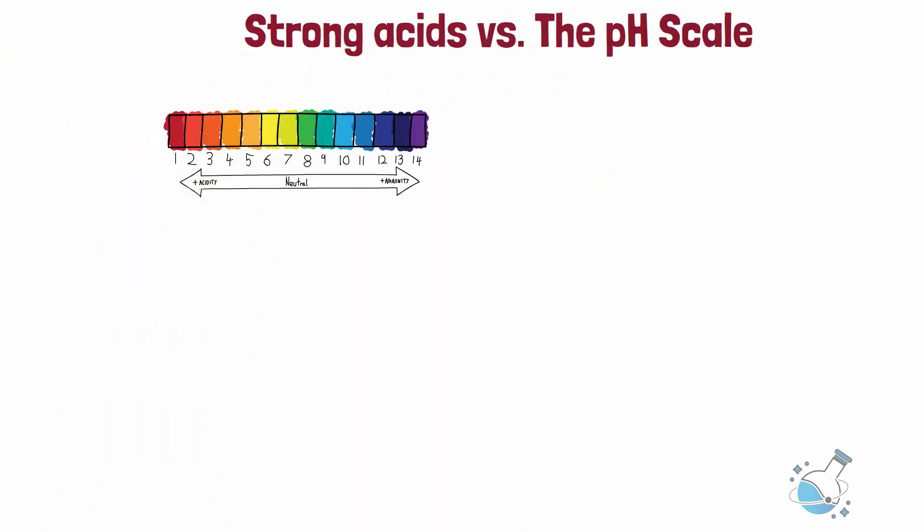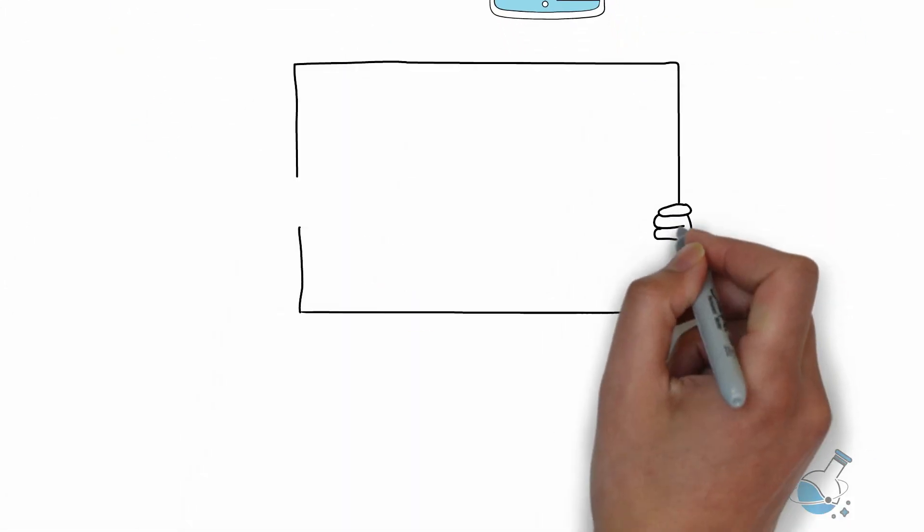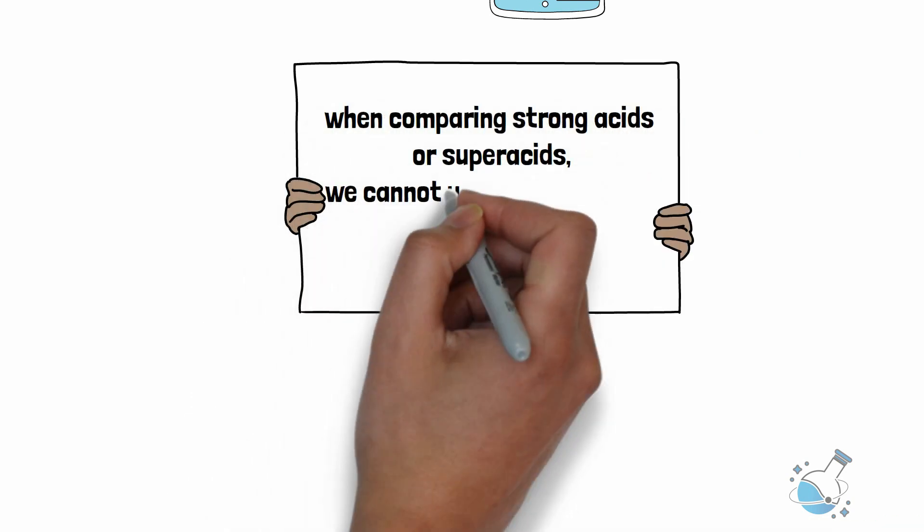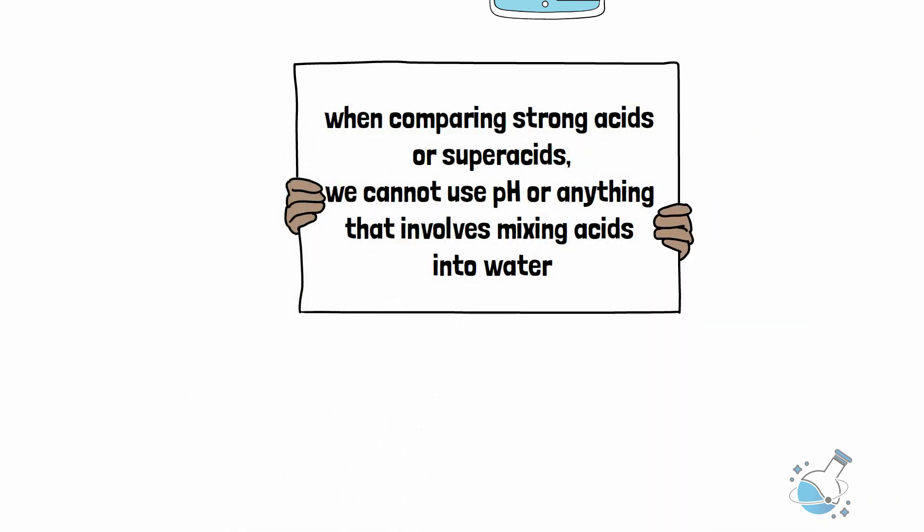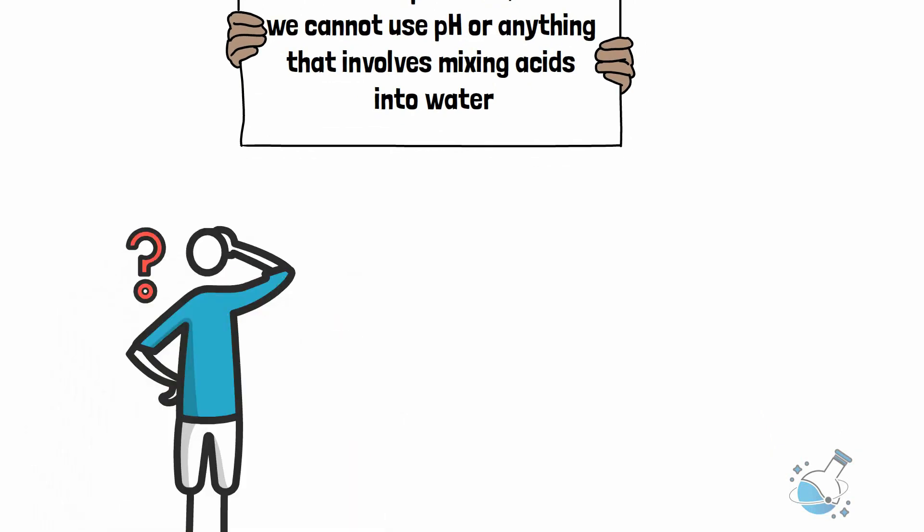And this is not the only problem. The pH system simply doesn't work well in the negative region. Also, water acts as an interference. As a result, when comparing strong acids or superacids, we cannot use pH or anything that involves mixing acids into water. So what do we do now?